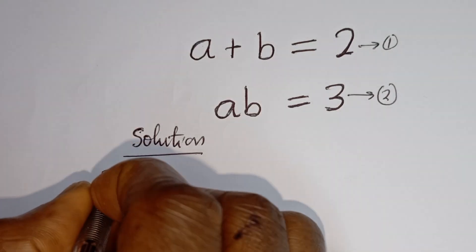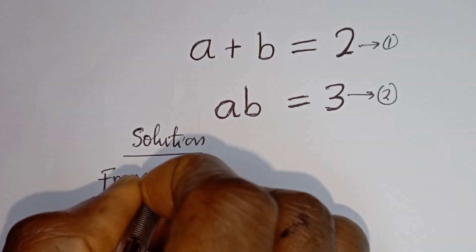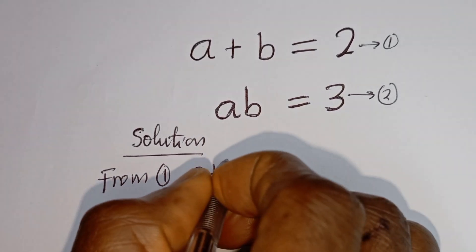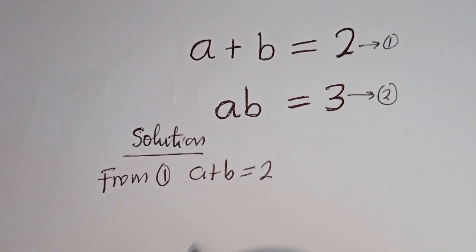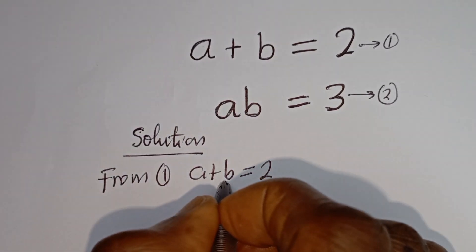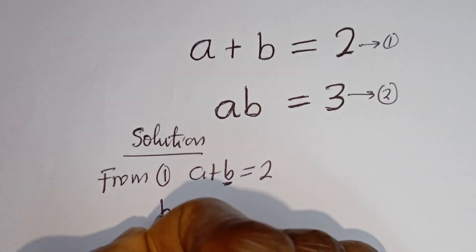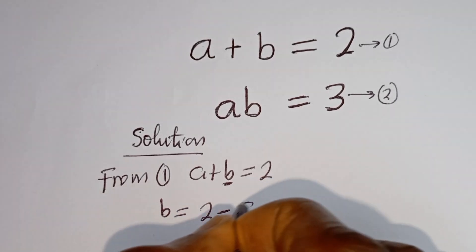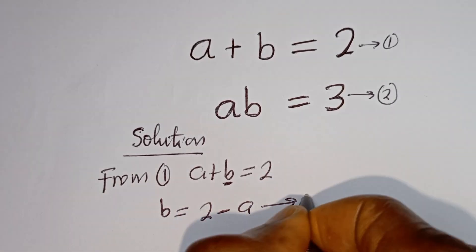From equation 1, A plus B is equal to 2. Then we can make B the subject of the formula. B will be equal to 2 minus A — let's call this equation 3.